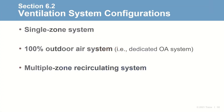The ventilation rate procedure of Standard 62 defines three ventilation system configurations: single zone, 100% outdoor air, and multiple zone recirculating systems. The procedure for calculating the system level outdoor air intake flow differs for each configuration.